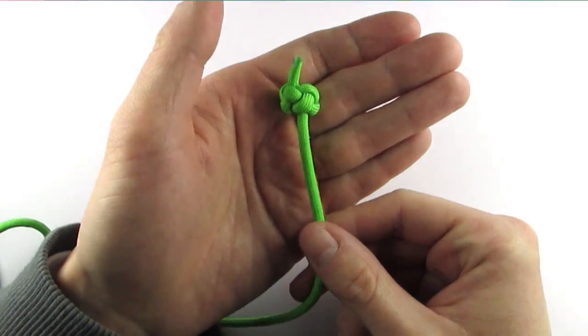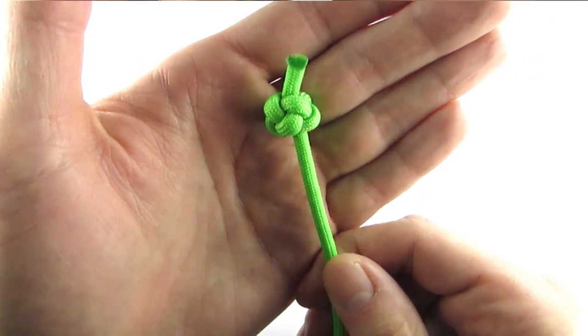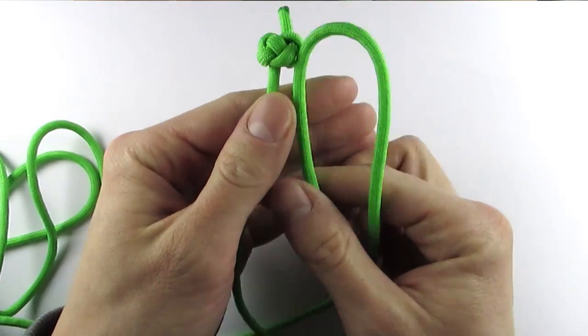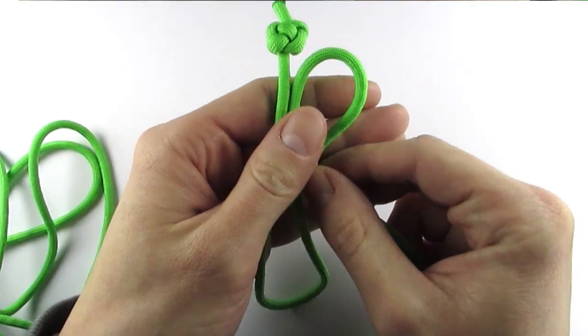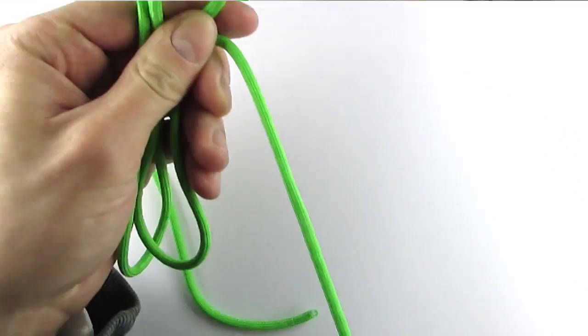Now the first thing I did was make a stopper knot at the very end of a piece of paracord. Any stopper knot will do, but I used a Celtic button. I then folded the cord making two bights at the bottom.